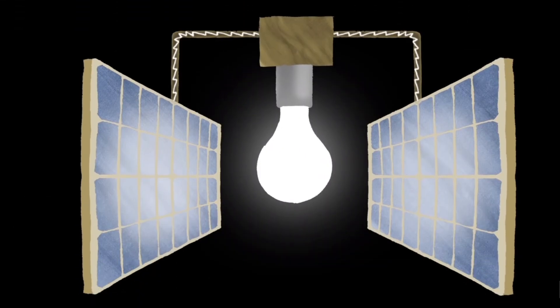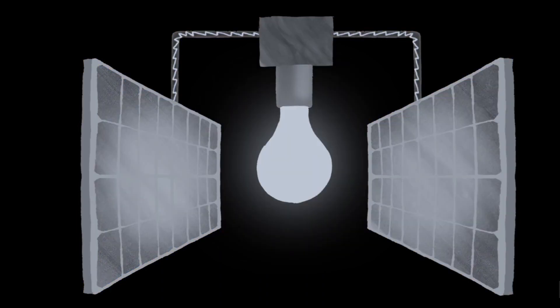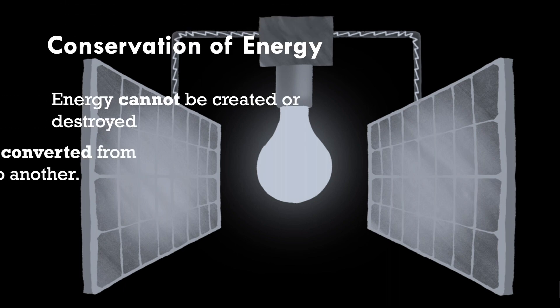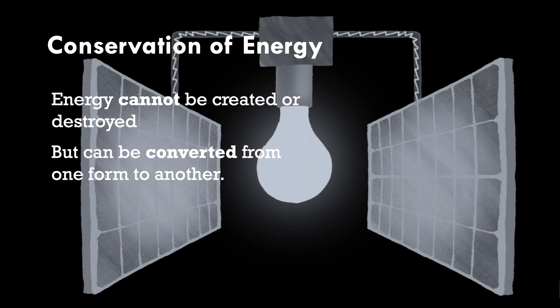Have you ever wondered why a bulb requires a source to power it, instead of feeding off some of its own light energy to produce the electrical energy it needs using solar panels like in this setup? It is because they do not work, because of the principle of conservation of energy, which states that energy cannot be created or destroyed, but can only be converted from one form to another. Hence, the total energy in an isolated system is constant.